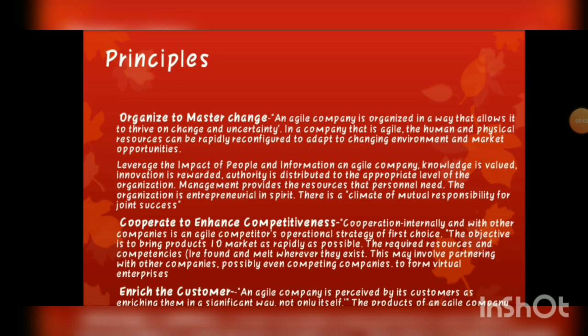Now coming to the principles of Agile Manufacturing System. First is: organized to master change. An agile company is organized in a way that allows it to thrive on change and uncertainty. The human and physical resources can be rapidly reconfigured to adapt to changing environment and market opportunities. एक agile company mainly focus करती है changes और uncertainty पर — future में जो भी uncertain हो उसके लिए ready रहती है।